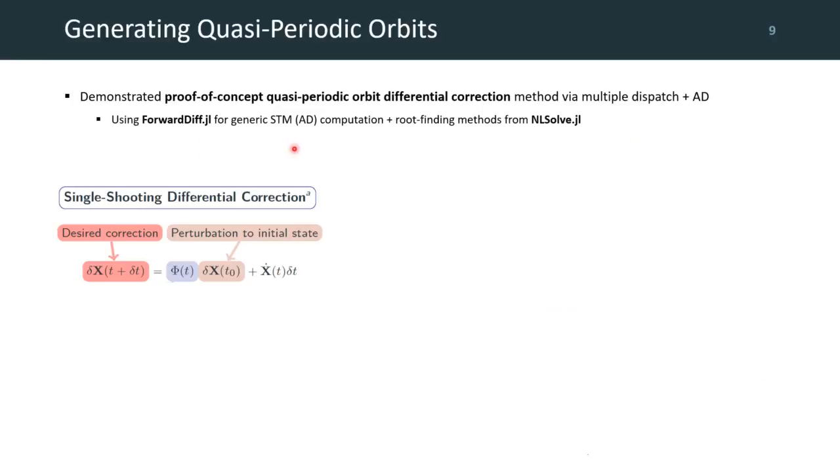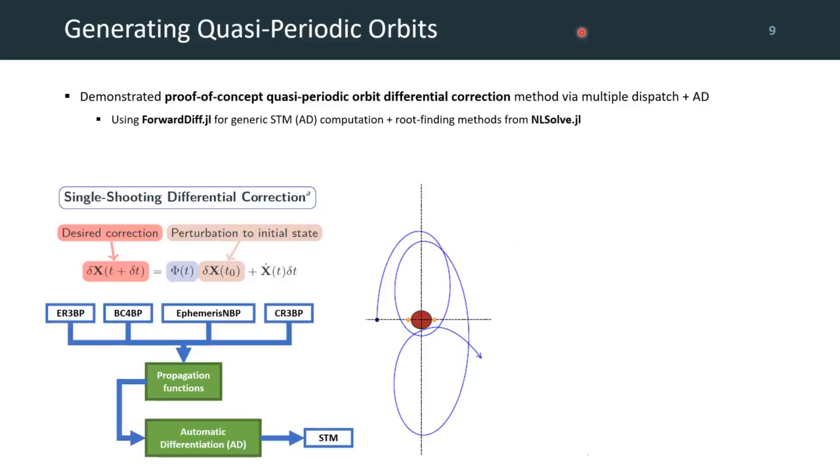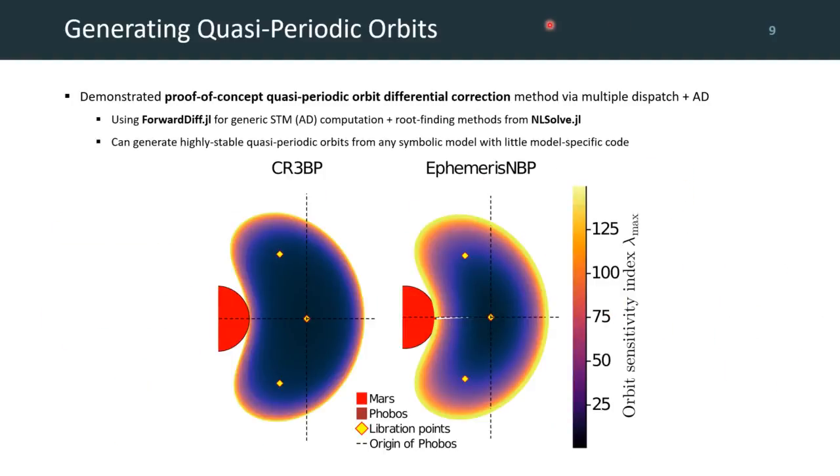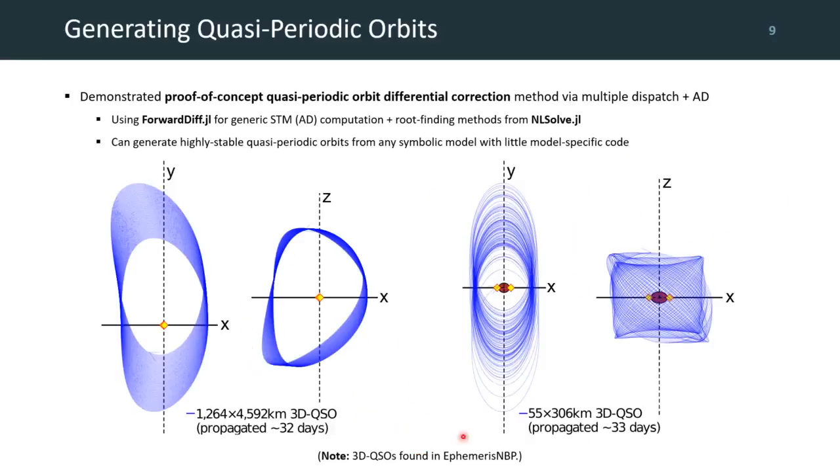Using forwarddiff.jl to provide automatic differentiation for my models, as well as root finding methods from nlsolve.jl, I also demonstrated a method for generating quasi-periodic orbits via single-shooting differential correction approach. Essentially, starting from an initial guess, we can target some sort of periodicity condition, such as ensuring a perpendicular axis crossing, and correct our initial guess based on the remaining distance. Again, because Julia code can be written in a highly generic manner, this functionality automatically supports all of our models, allowing us to find families of periodic orbits, both in simple models like the circular three-body problem, or in more realistic, higher fidelity models using real planetary ephemerids.